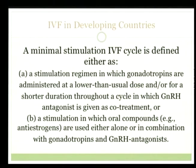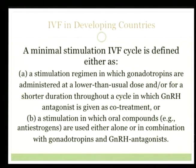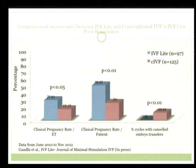Some of these slides overlap from yesterday, but for people who have come in today: a minimal stimulation IVF cycle is defined either as a stimulation regimen in which gonadotropins are administered at a lower-than-usual dose or for a shorter duration throughout a cycle in which GnRH antagonist is a cornerstone, or as a stimulation in which oral compounds like clomiphene citrate are used either alone or in combination with gonadotropins and GnRH antagonists. These are some data from June 2010 to November 2012 from our center that our group presented at the recent ASRM — we had a couple of posters.